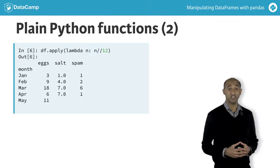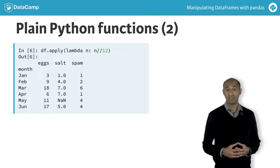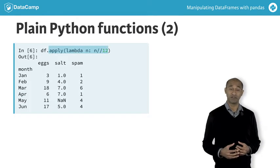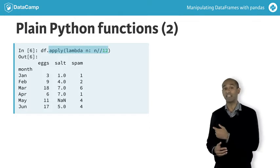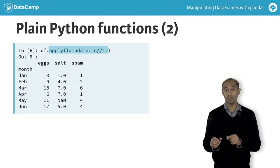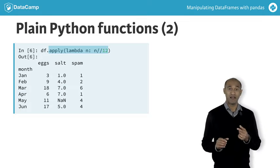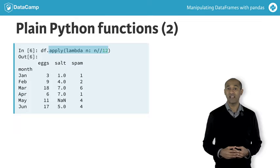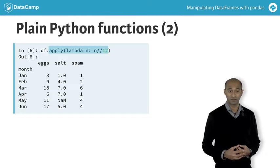Yet another way to achieve the same result is to use a lambda function with the apply method. The lambda keyword, followed by the input argument, a colon, and the output expression, provides a convenient one-line definition of a throwaway function.